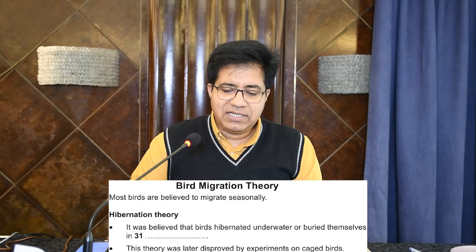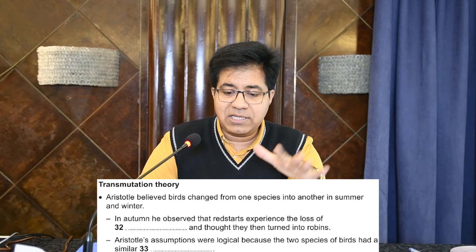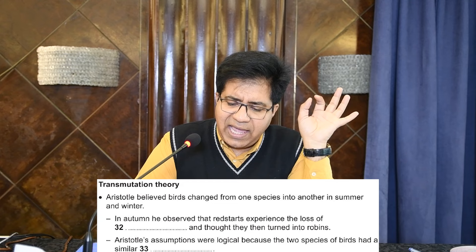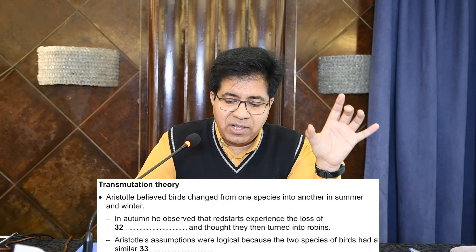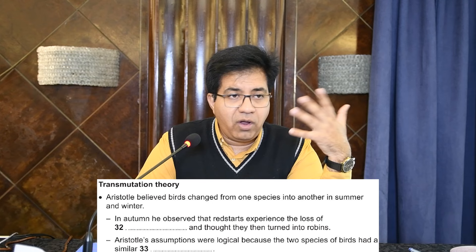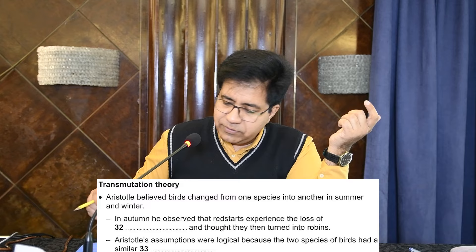In Part 4, the audio is fluent because it's a lecture with no interruptions, unlike a dialogue. For the transmutation theory question, the word 'autumn' is your signpost — when you hear it, be alert. It is observed that red starts experienced the loss of something. The answer could be phrased as lose, lost, or loss, and they may use passive voice. So listen for what red starts lose in autumn.